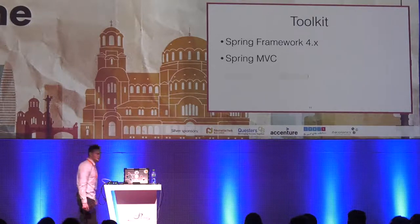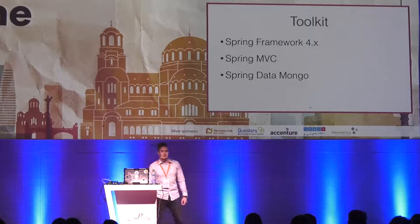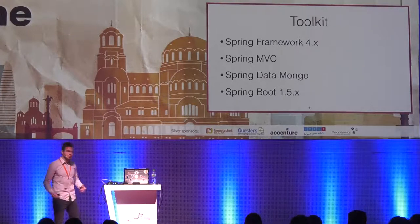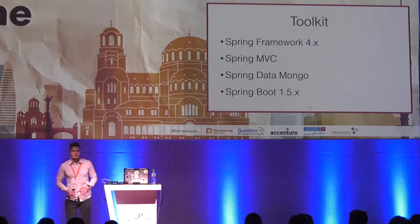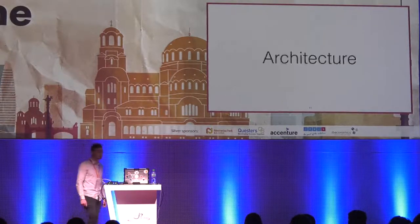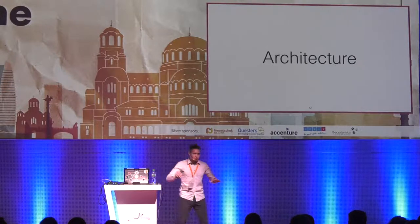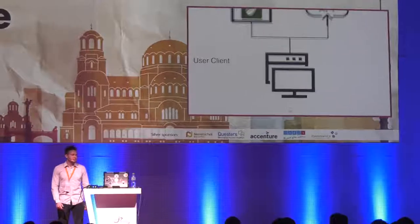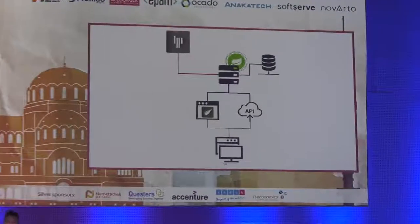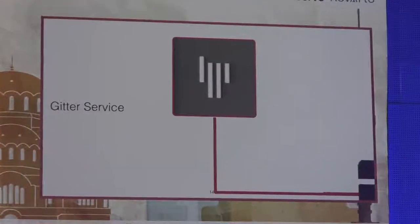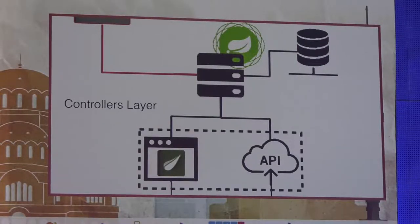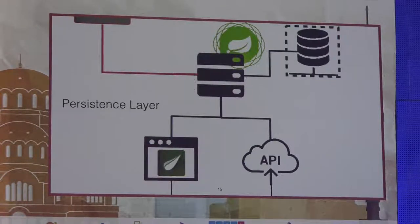For communication between client and server we have Spring Web MVC. We use Spring Data to communicate with the database, and to smoothly run our application we use Spring Boot 1.5. That's our tool set — really plain. The architecture is almost similarly plain and uncomplicated: a three-tiered architecture with a client on one side, Gitter as the source of messages on the other, and our application in the middle.